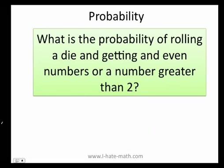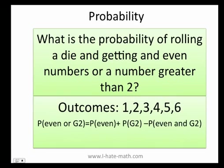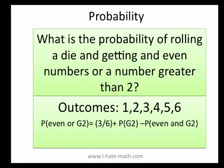What is the probability of rolling a die and getting an even number or a number greater than 2? First of all, let's find out the outcomes and do the formula. Remember, when you roll a die you can get a 1, 2, 3, 4, 5, or 6. We need to figure out the probability that it is even or greater than 2. For even, we have 2, 4, and 6 — that is 3 out of 6.